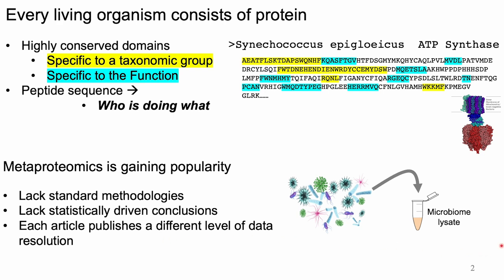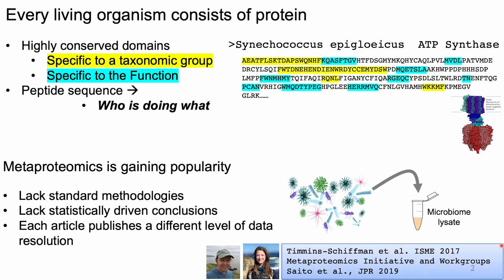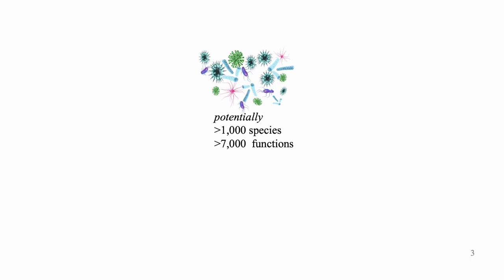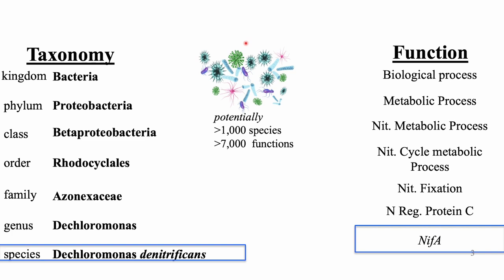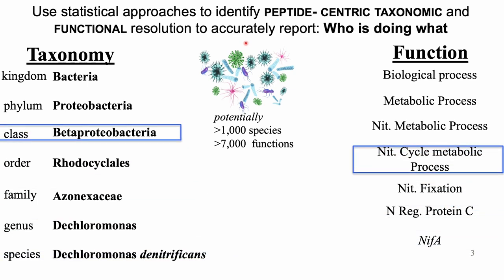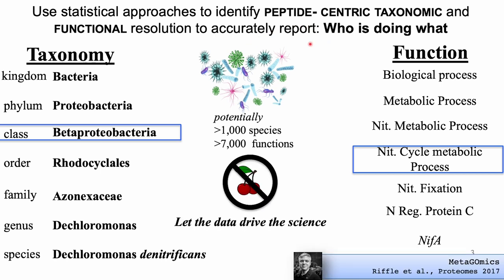It's a little bit of the Wild West out there, but landmark papers by Emma Timmons-Schiffman and Max Saito are standardizing these methods across groups. Specifically, our team is leveraging this sequence conservation and uses peptides like biomarkers. When we analyze a microbiome and its thousand species expressing a range of functions, rather than report on a select species or a specific enzyme, we collect quantitative peptide data and use statistical approaches to identify taxonomic and functional resolution to accurately report who is doing what. The goal is to use all of our data and let the data drive the science, and mass spectrometry peptide quantification is now faster and more accurate.